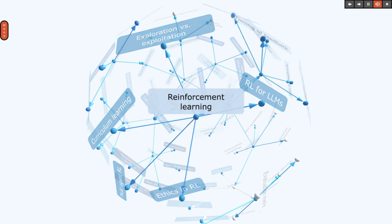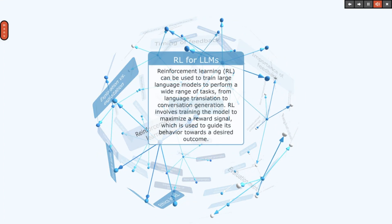Reinforcement learning can be used to train large language models to perform a wide range of tasks, from language translation to conversation generation. RL involves training the model to maximize a reward signal, which is used to guide its behavior towards a desired outcome.